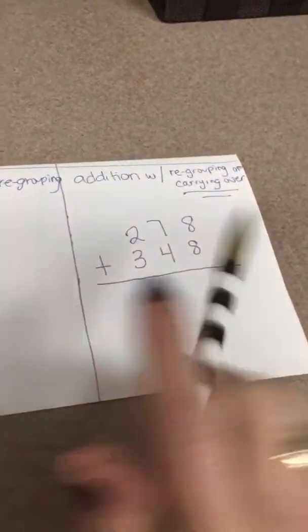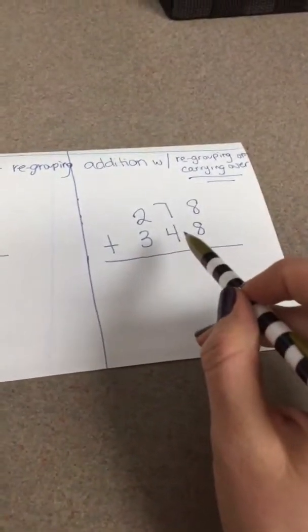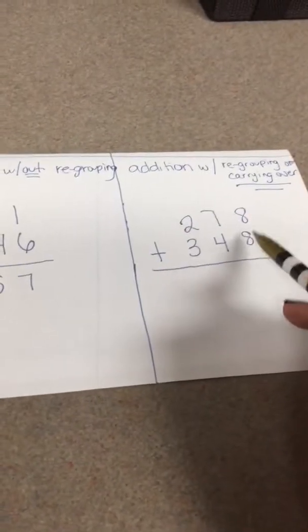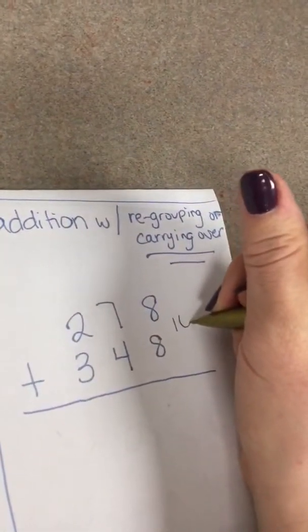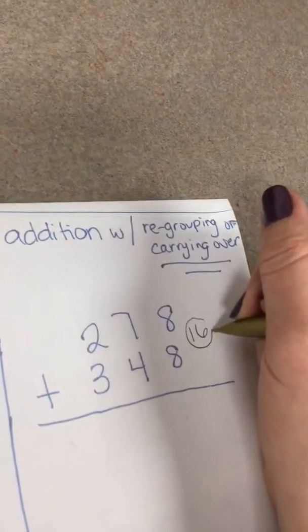Addition with regrouping, or in math you might say carrying over. And so you'll start just adding in the ones like normal. Eight plus eight is 16. This is a strategy that I've taught my students. I've just taught them to kind of write that answer, whatever they get, sort of to the side, because I've noticed when kids are really thinking okay where do I put this number, what number do I carry over, they forget in the first place what the answer even was.